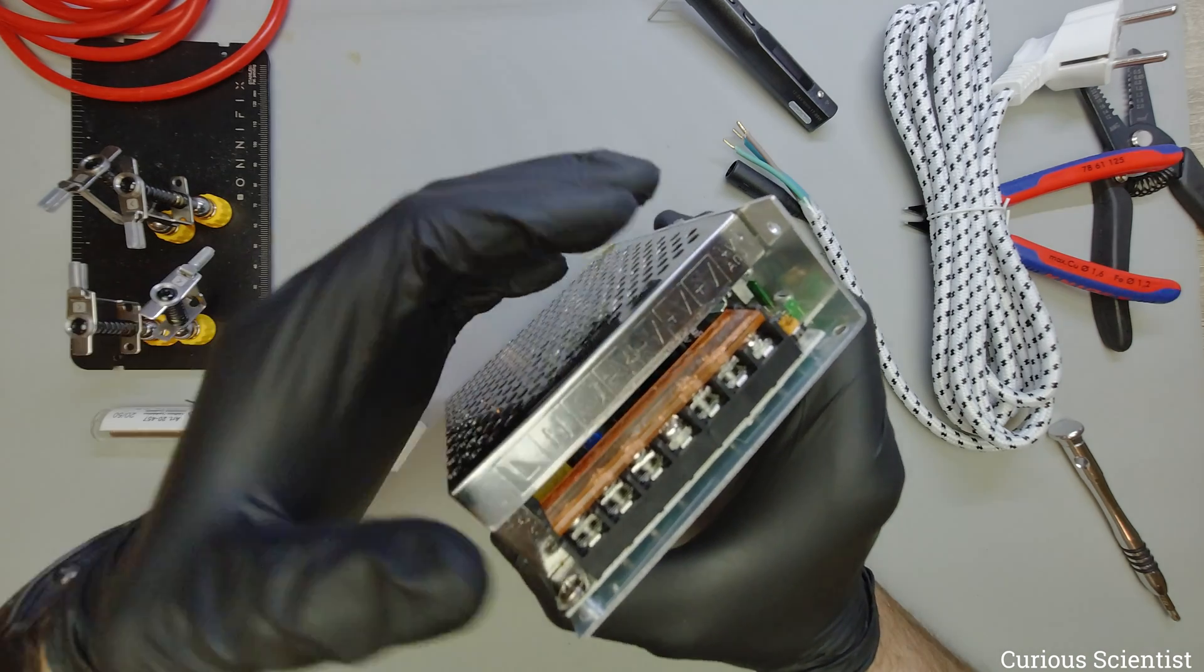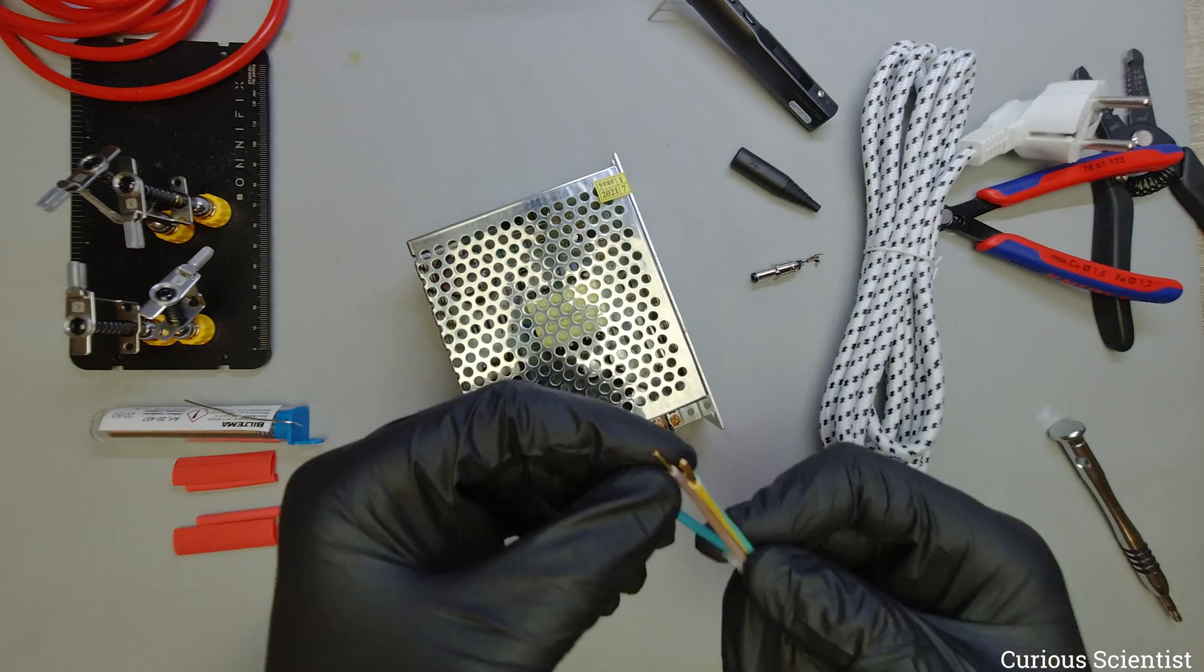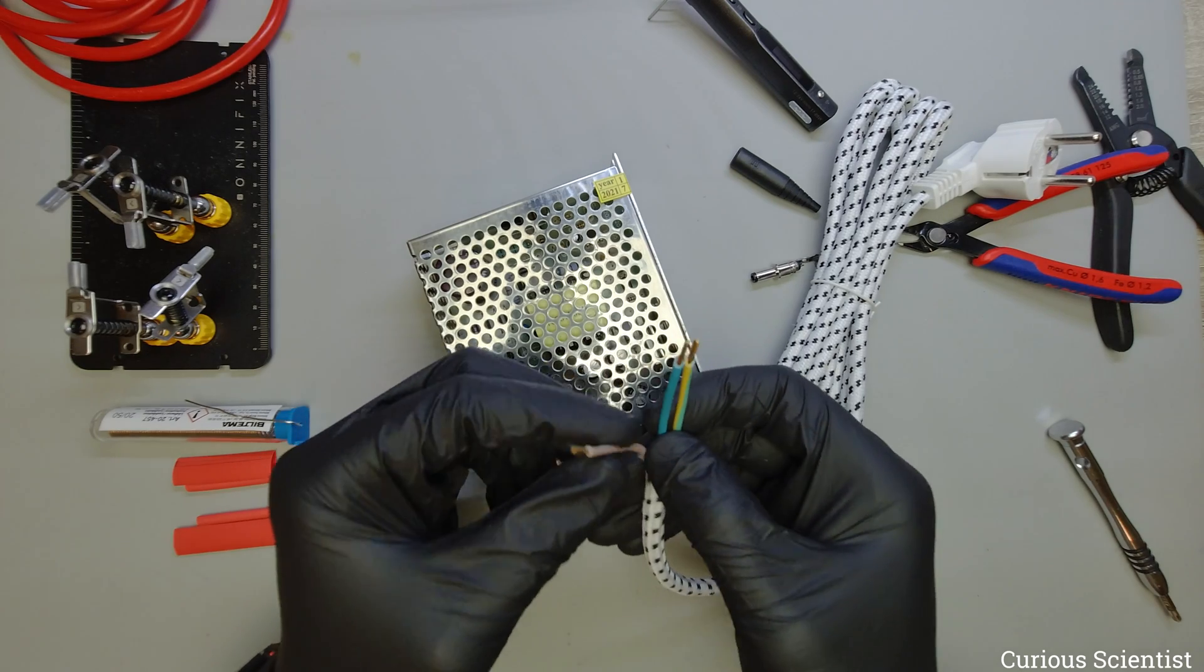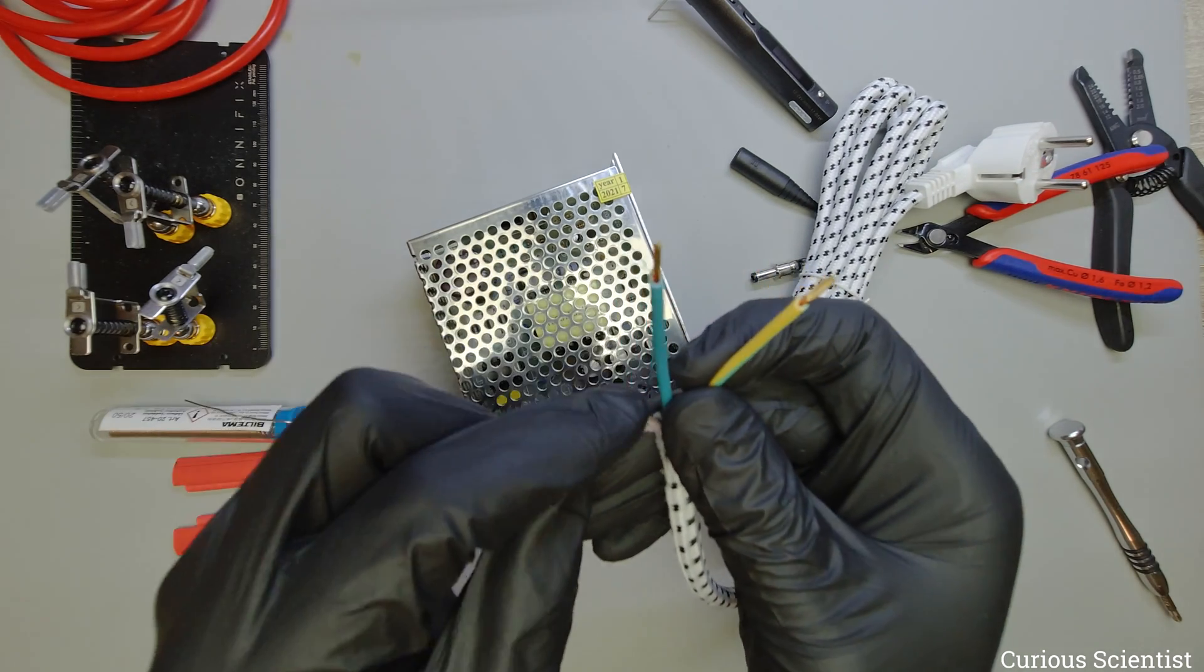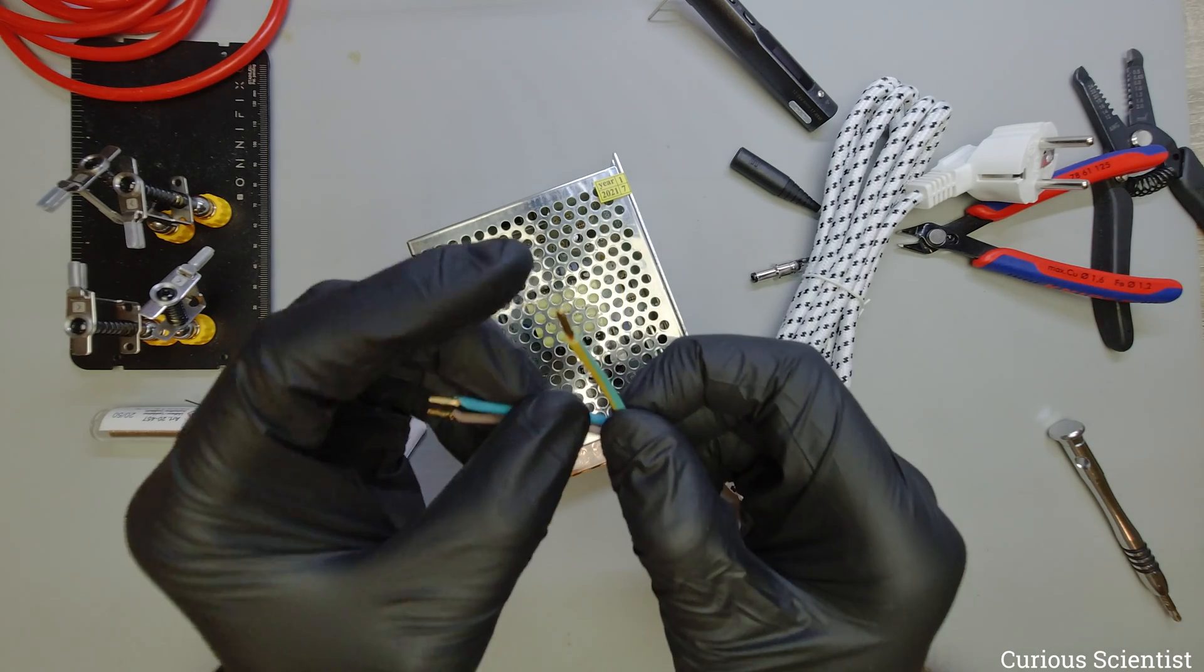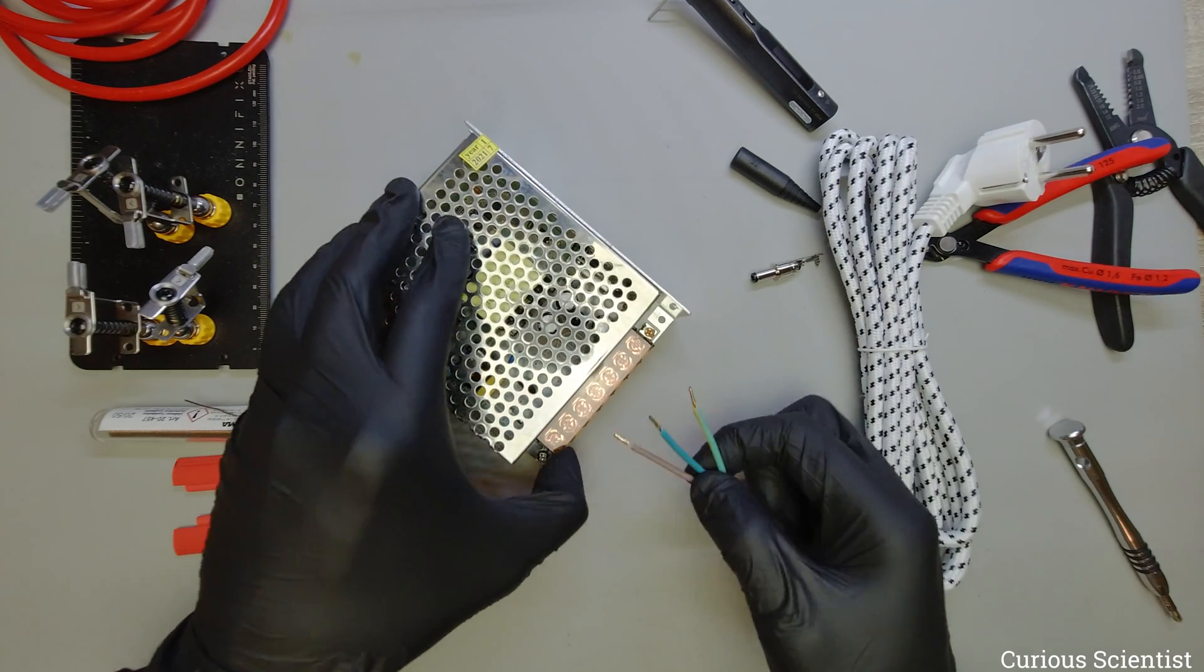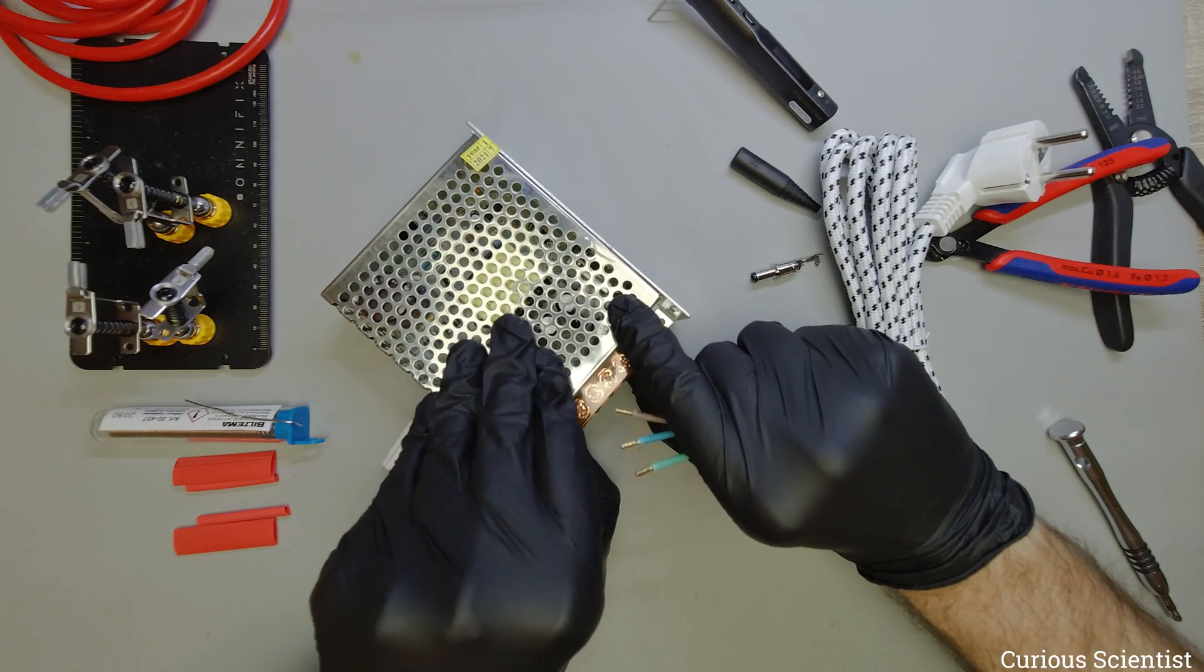So I will just connect the cables. And if you don't know I also have to google it sometimes because I just simply forget it. Brown is the live cable, blue is the neutral cable and this double colored cable yellow green is the ground. So let's just connect it and let's see if it works.